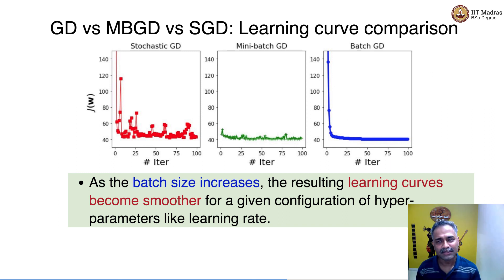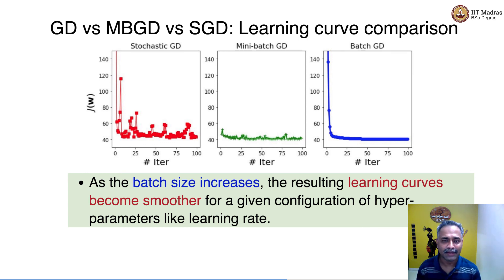This brings us to the end of the discussion about variations of the gradient descent algorithm and also the optimization component of the linear regression model. In the next video, we will study the final component of the linear regression model, which is the evaluation.